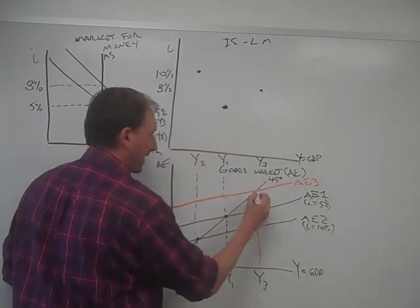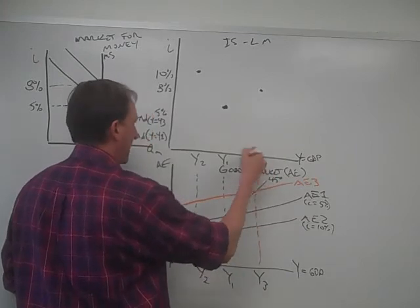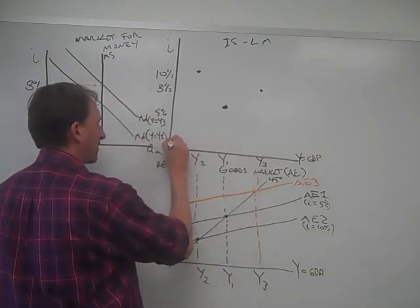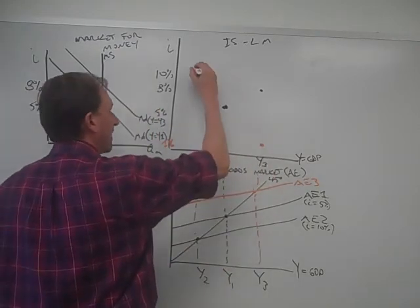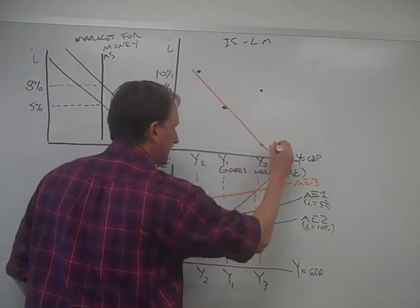So that would give us Y3, which is this Y3, and this is 1%, right? And then 1%, we'd arrive at that point. Now we have our three points for IS-LM, for IS at least, and that's our IS curve.